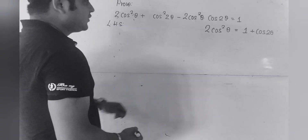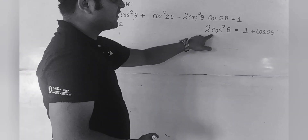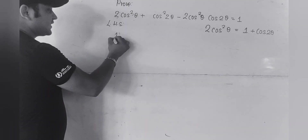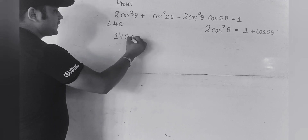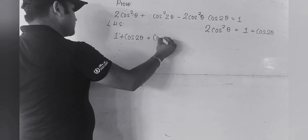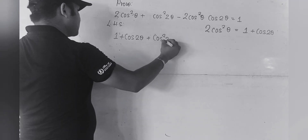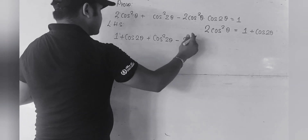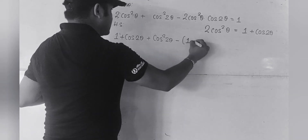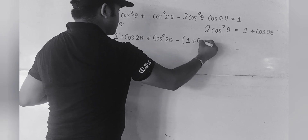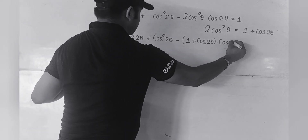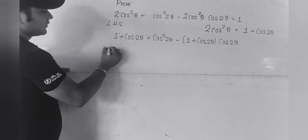Now in this question, we are going to substitute the value of 2cos²θ. In place of 2cos²θ, we can write 1 + cos2θ. So we have 1 + cos2θ + cos²2θ minus, and again in place of 2cos²θ we write 1 + cos2θ, multiplied by cos2θ.